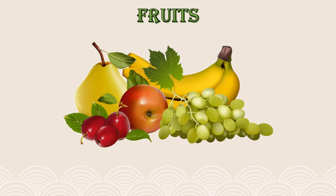Till now we learnt how roots, leaves, stems, and flowers are eaten as vegetables. Now the next item which we get from plants is fruits. We get lots of fruits from plants, for example orange, mango, apple, grapes, banana, etc. Fruits keep us healthy and strong. We should eat plenty of fruits daily.